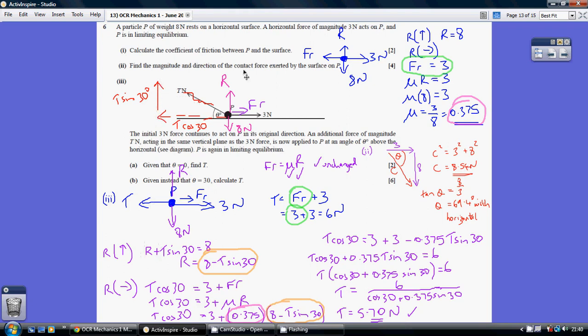Now we do need to resolve vertically again because our normal reaction has changed. We've now got a new force acting vertically. So resolving vertically, we've got R plus T sin 30 equaling 8, so R equals 8 minus T sin 30. That's important because that's going to impact the friction.